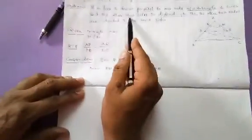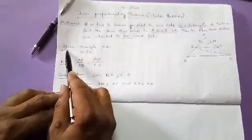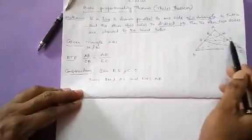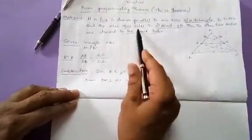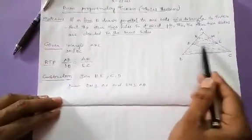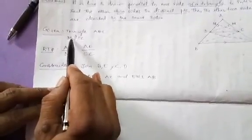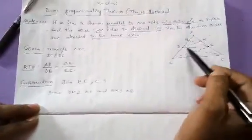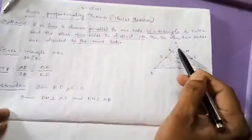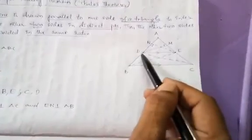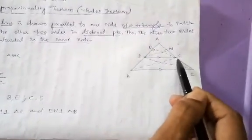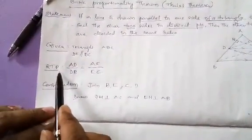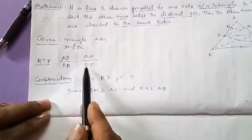From this statement we write: Given — triangle ABC, and DE which is parallel to BC. Under RTP (Required To Prove), this parallel line intersects AB and AC at two distinct points D and E such that AD/DB = AE/EC, which is required to prove.